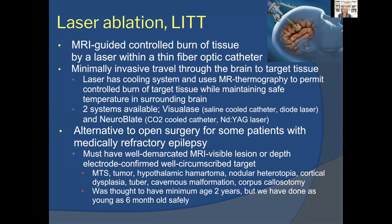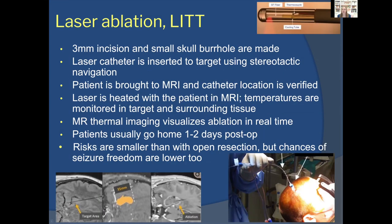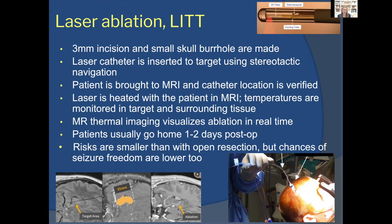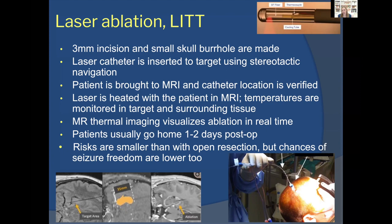The fiber catheter is just 3mm in width. It is placed through a small scalp incision, screwed temporarily into the skull, then the patient is brought into the MRI scanner to verify catheter location. The lesion is then heated and ablated under real-time MRI guidance, watching the burn progress until the target cells will necrose while confirming surrounding tissue stays safe. Patients typically go home one to two days later with only a 3mm cut; steroids are given to manage swelling of the ablated tissue.